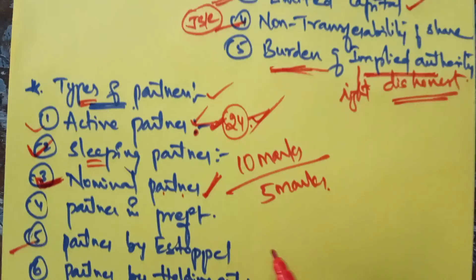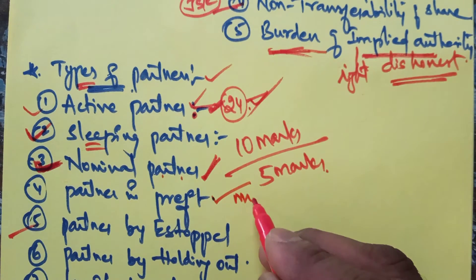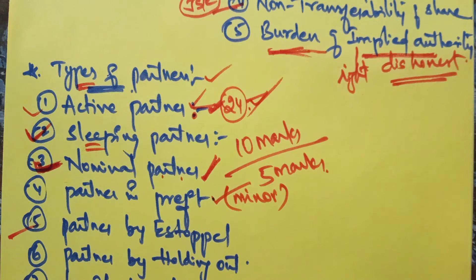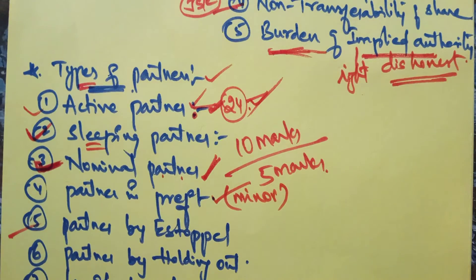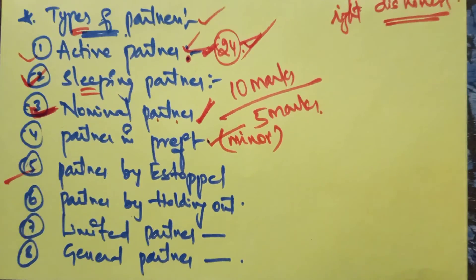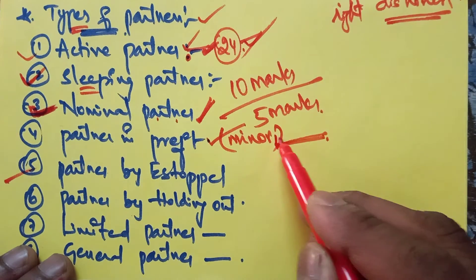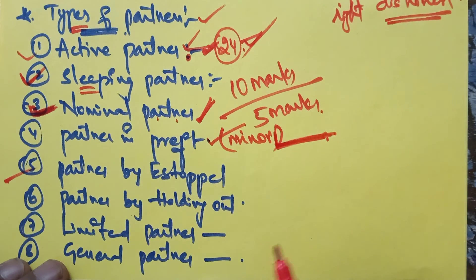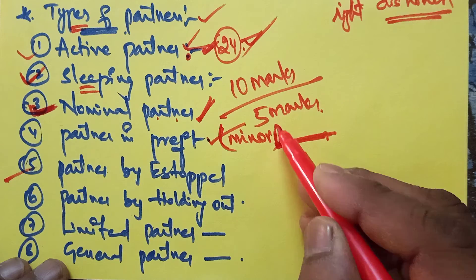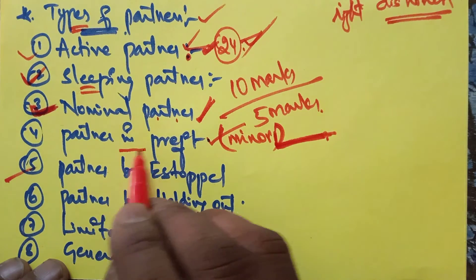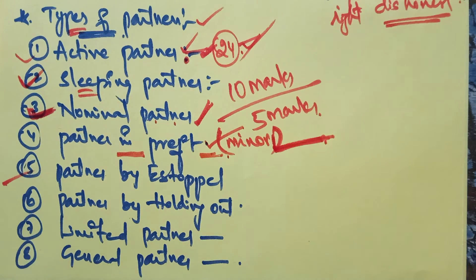Another type is partner in profit, related to minor partners. A partner in profit participates only when the firm earns profit; when the firm incurs losses, a partner in profit or minor partner will not share in the losses. A minor is a person below 18 years of age. If taking a minor into the firm benefits the firm, other partners may do so, and the minor will be responsible only in profits with limited liability. When the minor becomes a major, his liability converts from limited to unlimited.